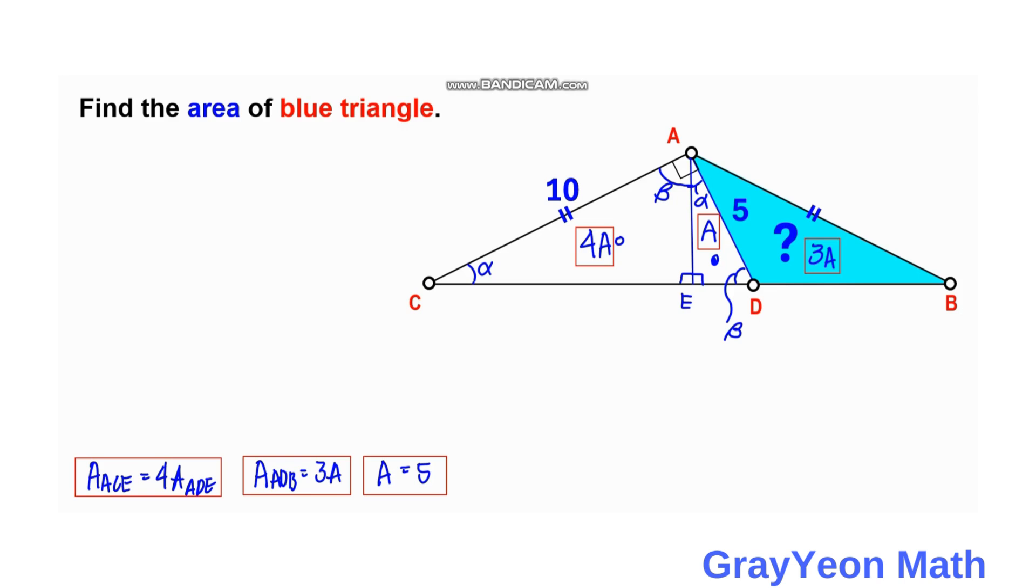Now, since we are looking for 3A, the area of ADB is equal to 3A. But A is equal to 5, so 3 times 5. Area of ADB gives us 15 square units, and that is our answer.